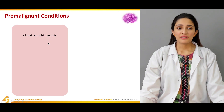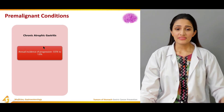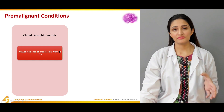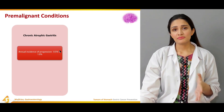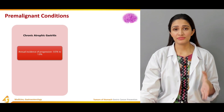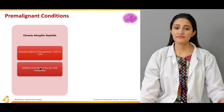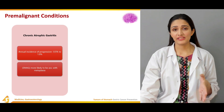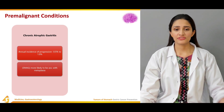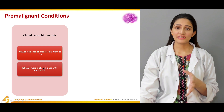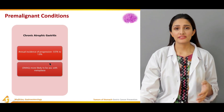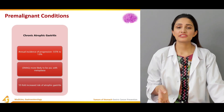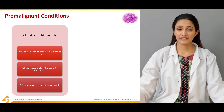Regarding chronic atrophic gastritis, the annual incidence of progression is around 0.5 to 1%, meaning 0.5 to 1% of the population can be at risk of developing gastric cancer. Chronic atrophic gastritis is divided into two types: environmental atrophic gastritis and autoimmune atrophic gastritis. The environmental type is more likely to be associated with metaplasia, and chronic atrophic gastritis has a 10-fold increased risk of developing gastric cancer.